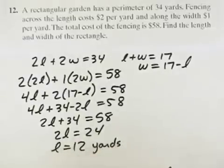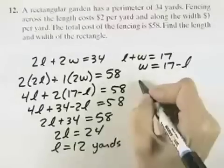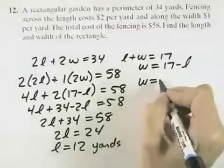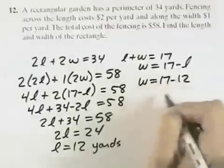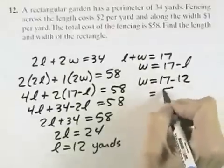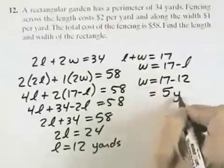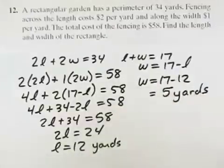Dividing by 2, we get L equals 12 yards. That means we need 12 yards in length. Now for the width, width equals 17 minus L, which is 17 minus 12. So the width is 5 yards.